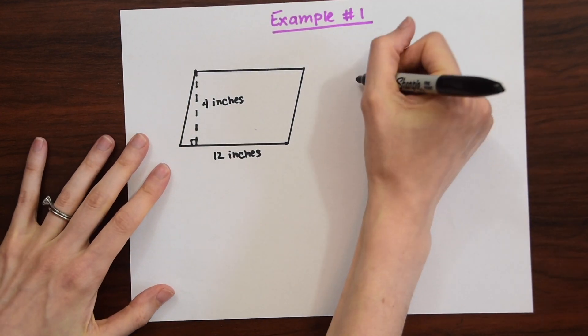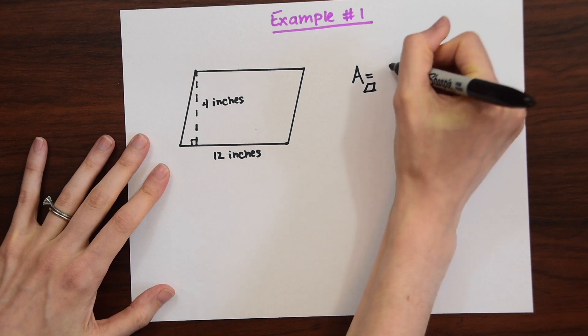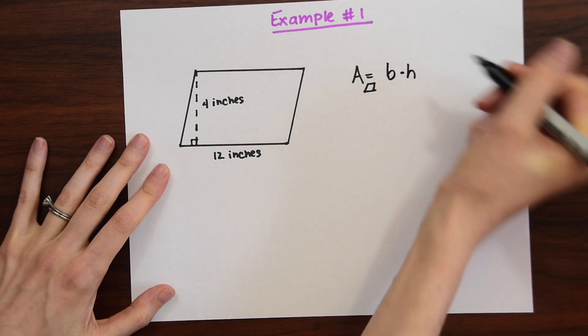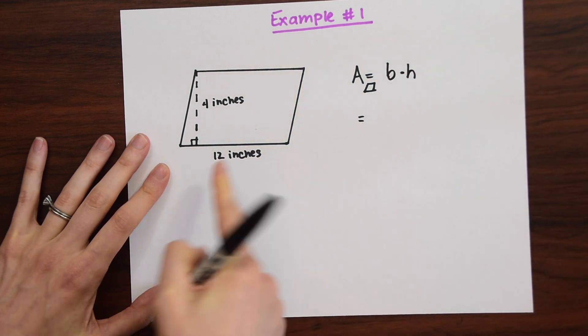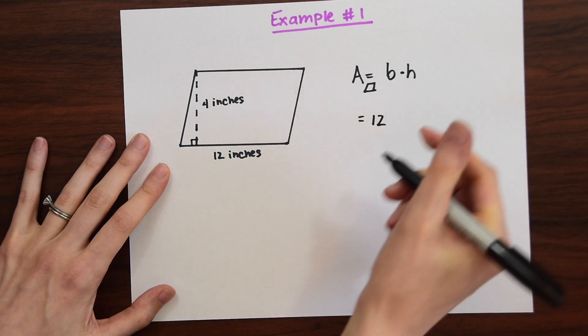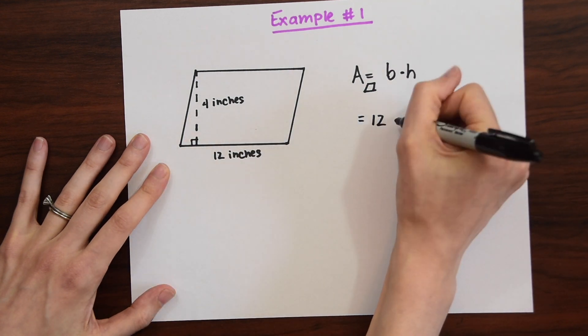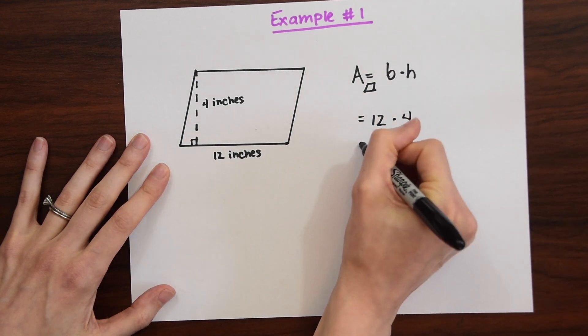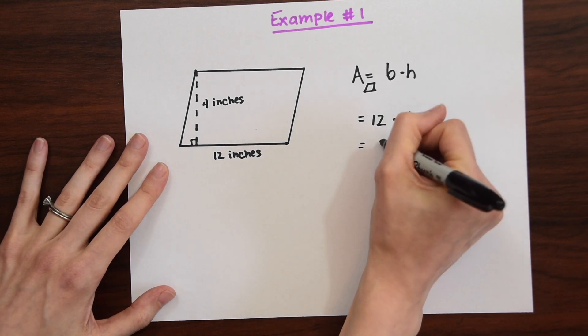So let's just write out our formula. We remember that A for the parallelogram is equal to the base times the height or BH. So the base we see is 12. The height H is 4.